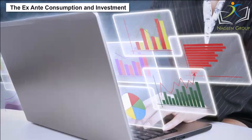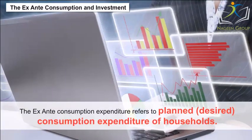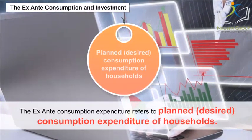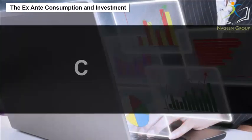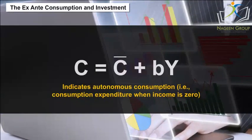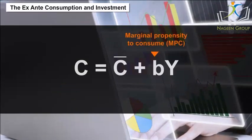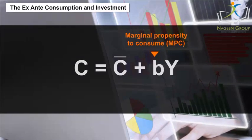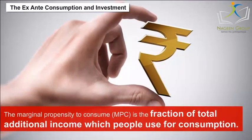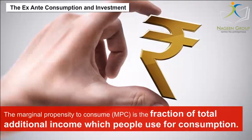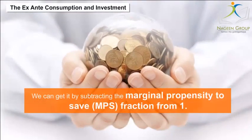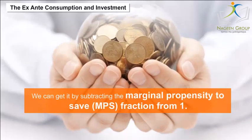Ex-ante consumption and investment: The ex-ante consumption expenditure refers to planned or desired consumption expenditure of households. The consumption function is represented by C = C̄ + BY, where C̄ indicates autonomous consumption, i.e., consumption expenditure when income is zero. B shows marginal propensity to consume or MPC, and Y stands for level of income. The marginal propensity to consume (MPC) is the fraction of total additional income which people use for consumption. We can get it by subtracting the marginal propensity to save (MPS) from one.